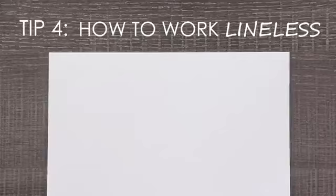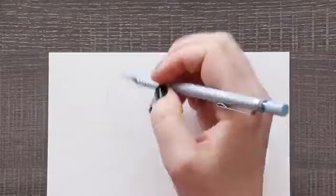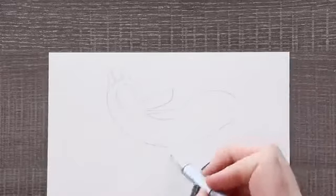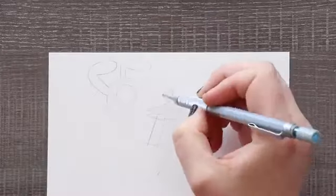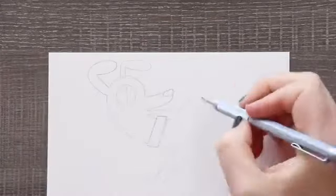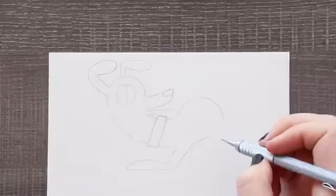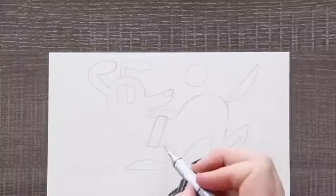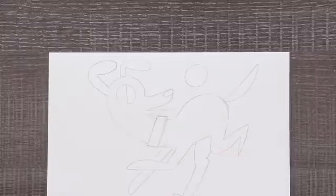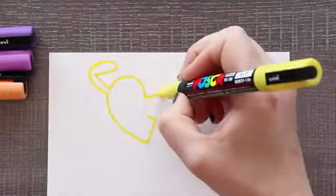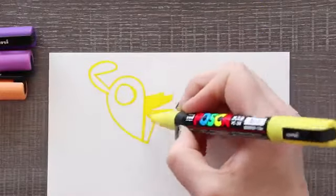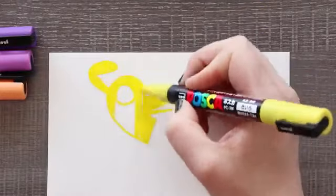Tip number four is how to accomplish a clean lineless look with Posca pens. When I work with Posca pens I find their bold colors and lines make for very nice lineless work. This means the illustration has no line work and relies on the shapes and colors to make the illustration pop out. Because you don't have line work to help guide you on where to put color I would suggest penciling your drawing and lightly erasing the marks with a kneaded eraser by dabbing it on the paper.